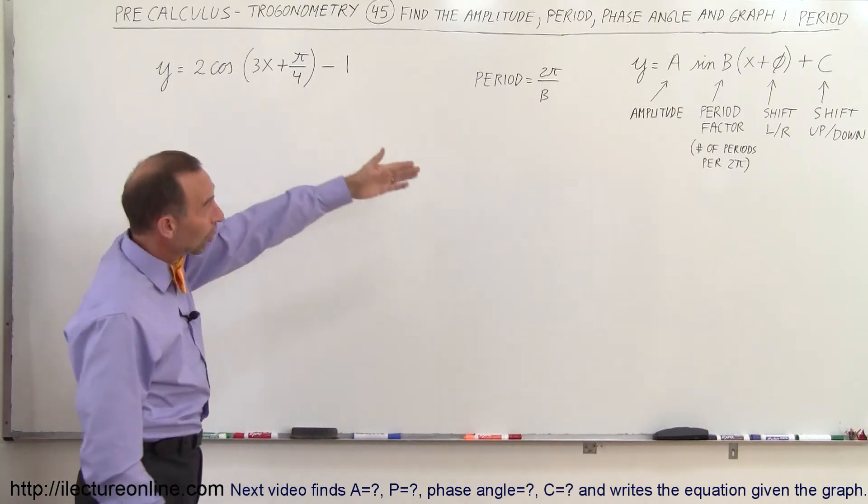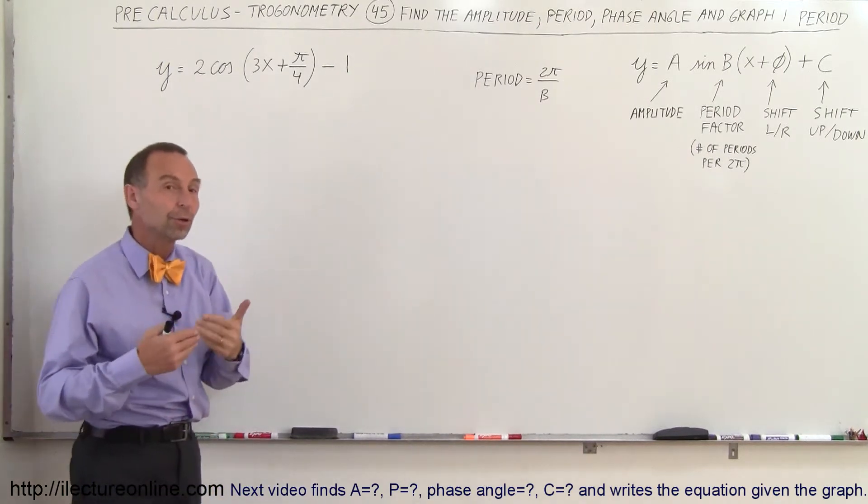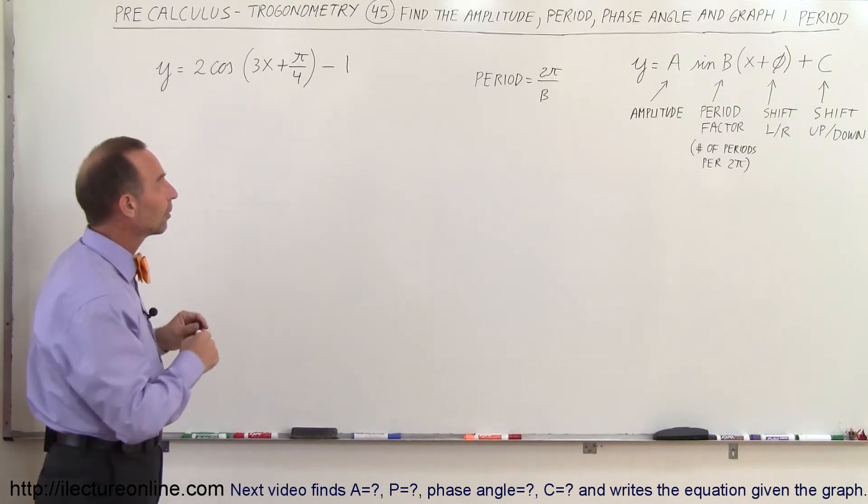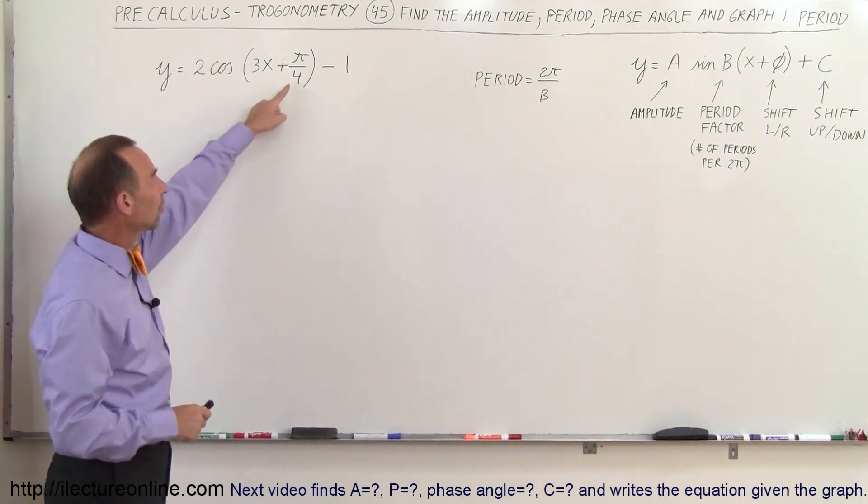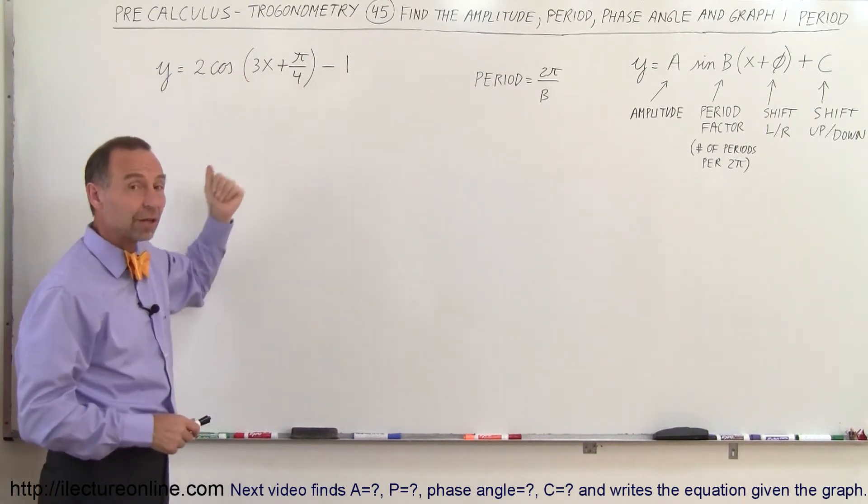Yes indeed, three is what we call the period factor. It'll determine the number of periods in a 2π length on the x-axis but it will give you the wrong phase angle if you don't factor out the three first.